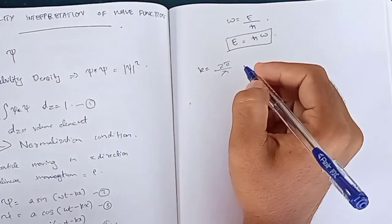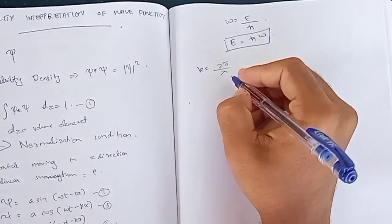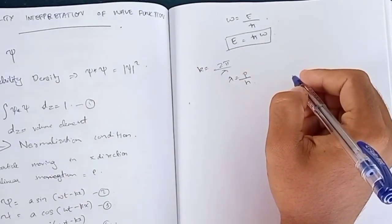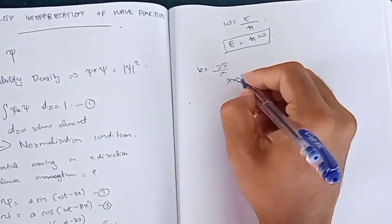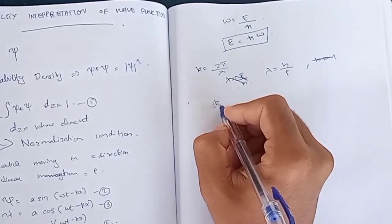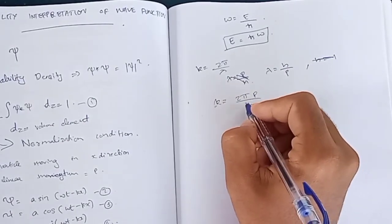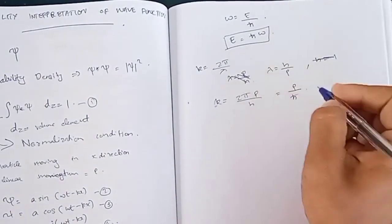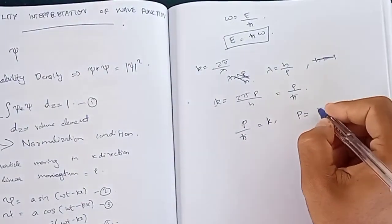Now k = 2π/λ. Using de Broglie's relation λ = h/p, we substitute: k = 2π/λ = 2π × p/h = 2πp/h. Since 2π/h = 1/ħ, we get k = p/ħ, which gives p = ħk.